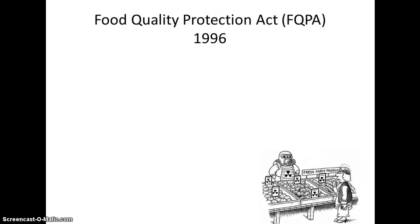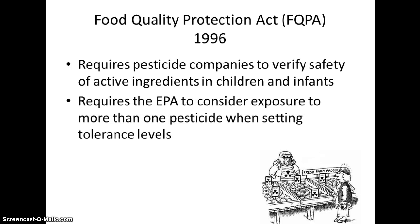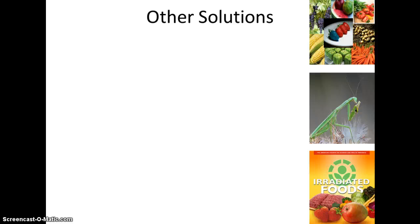The Food Quality Protection Act was passed in 1996. Once again, it fell on the pesticide companies to verify the safety of ingredients specifically regarding children. When the EPA set tolerance levels, they also had to consider that most fruits and vegetables have more than one pesticide residue, and that combination had to be factored in.